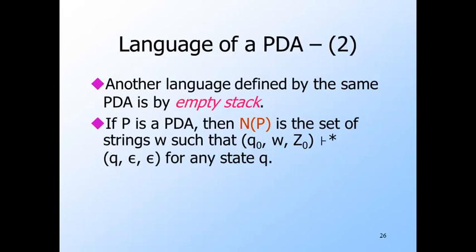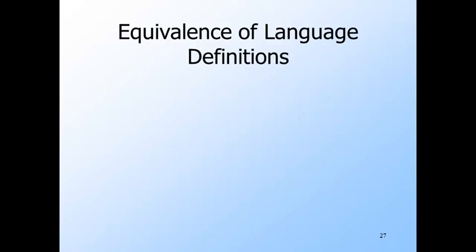We can talk about the set of strings that make the PDA empty its stack. This language is conventionally called N(P) for a PDA P — the N stands for null stack. Formally, this is the set of strings W such that, started in the usual ID with input W, P eventually reaches an ID in which it has consumed all of W and its stack is empty. We don't care about the state — it can be final or non-final. Thus, every PDA defines two different languages in two different ways. However, the classes of languages defined by all PDAs in these two ways are the same, and in fact are the context-free languages.